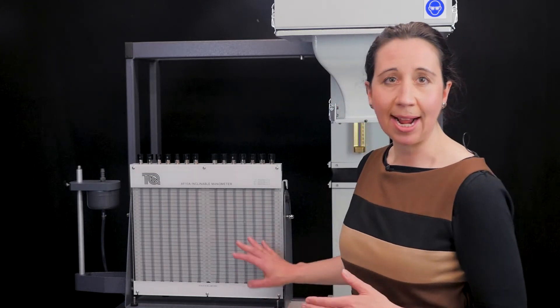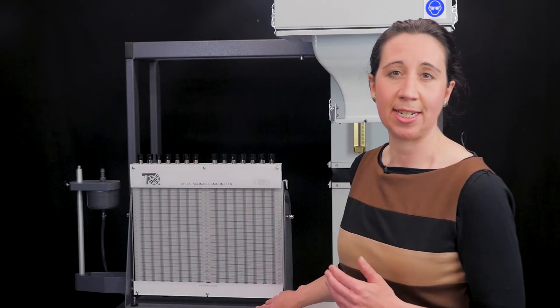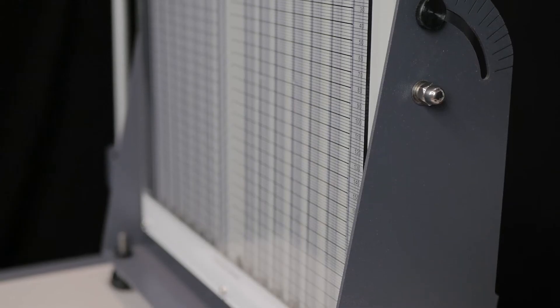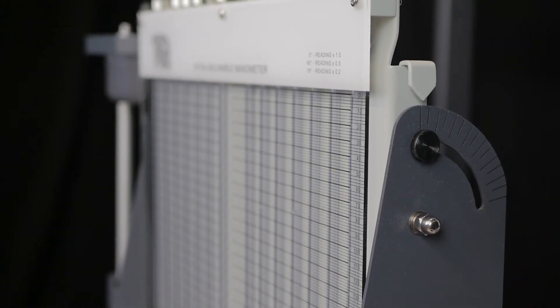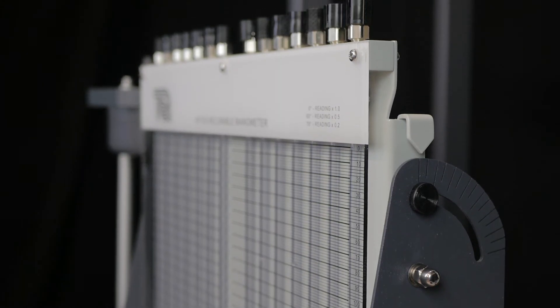It also has an adjustable angle using the thumb screw fixings allowing you to move it from fully vertical to 80 degrees. These markings on the side show angles in 5 and 10 degree intervals. This increases the sensitivity of the manometer allowing you to see small pressure changes more clearly.